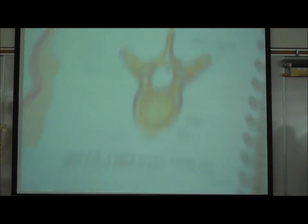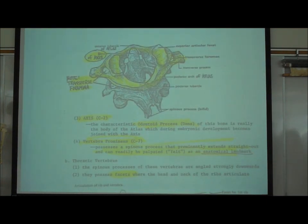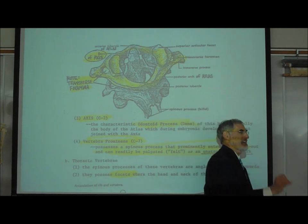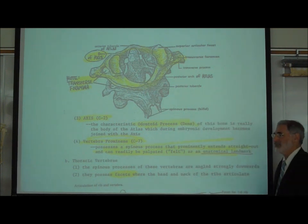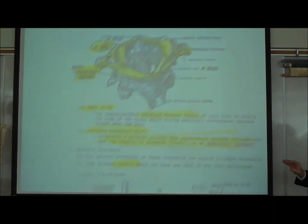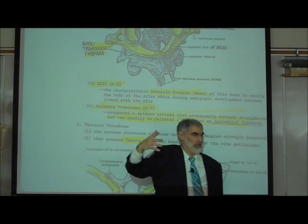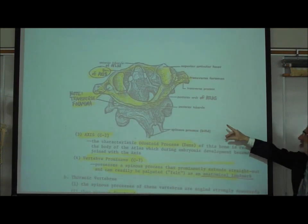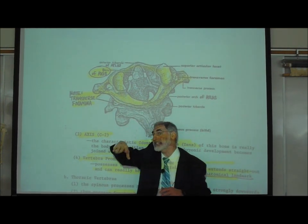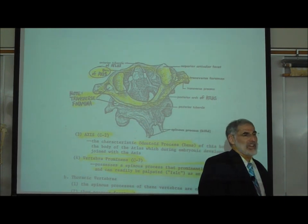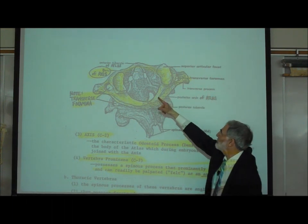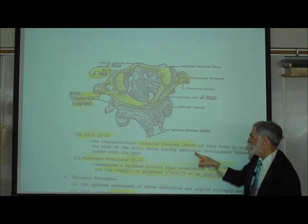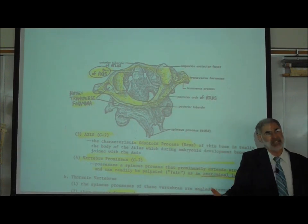Another cervical vertebra to recognize is the second cervical vertebra, C2, referred to as the axis. While the atlas is missing parts, the axis has extra parts — specifically an additional process sticking straight up called the dens or odontoid process. There is no other vertebra that has this additional part.